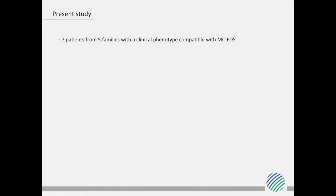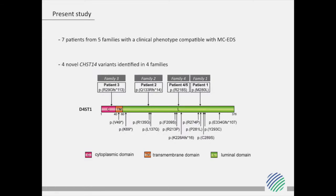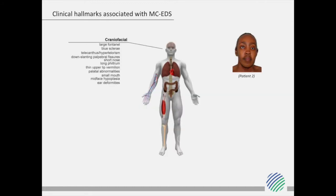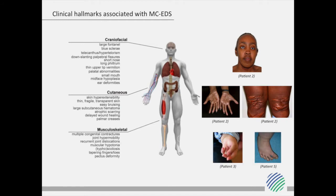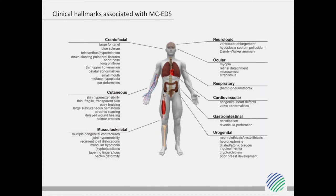In our paper, we studied seven individuals originating from five families with a musculocontractual EDS phenotype. In four of these families, we identified novel homozygous mutations in the CHST14 gene. Comprehensive analysis of the clinical hallmarks of all 31 reported patients revealed that they generally present with typical craniofacial abnormalities recognizable at birth, cutaneous features including soft and hyperextensible skin with atrophic scars, easy bruising and palmar wrinkling, and musculoskeletal features — most notably typical congenital joint contractures of hands and feet. These features occur often in combination with one or more other clinical manifestations which can affect several organ systems, as summarized here.